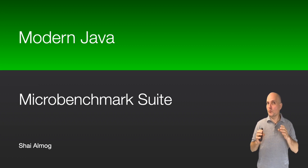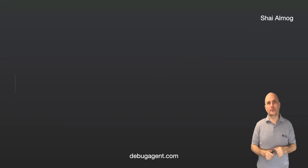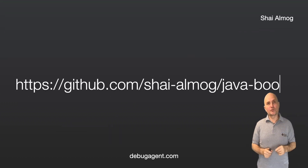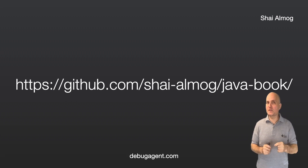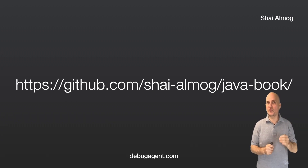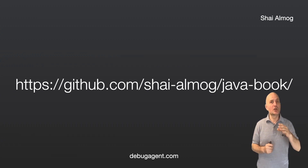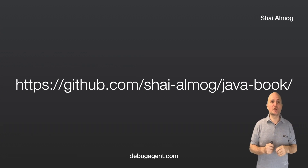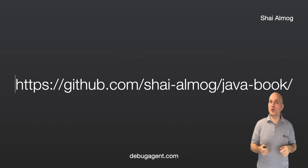How can we authoritatively say if X is faster than Y? As usual, the code for this and the other videos in this series is available on my GitHub page, so check out this project, star it, and follow me on GitHub.